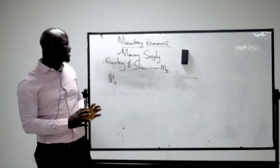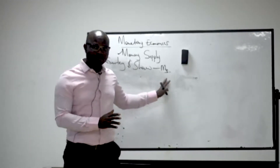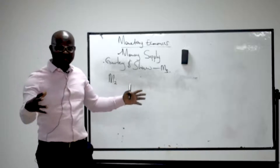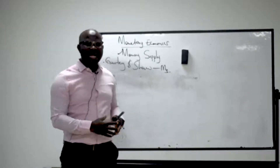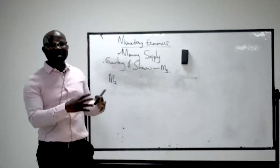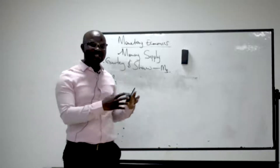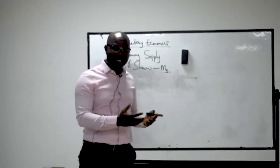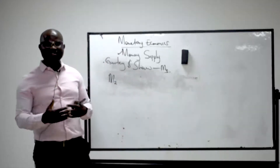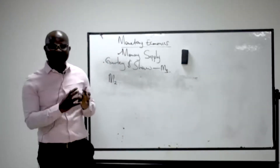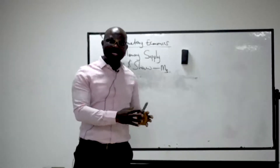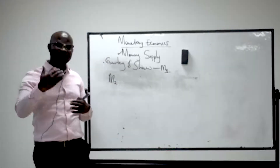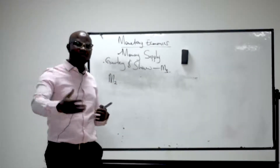Gurley and Shaw explain M3 as the currency in the hands of the public plus demand deposit — which equals savings and current account — plus time deposit — which equals the fixed deposit of the customer — and the deposit or savings of non-financial institutions.